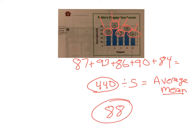There is your average score, which makes sense — three scores in the 80s, two in the 90s, so the average is going to be about 88. Hopefully you did okay on that one.